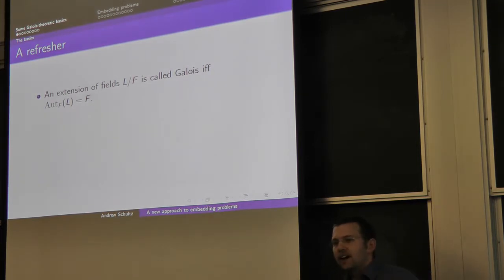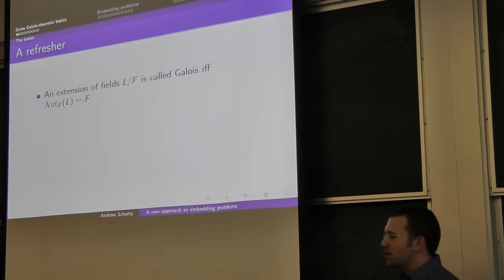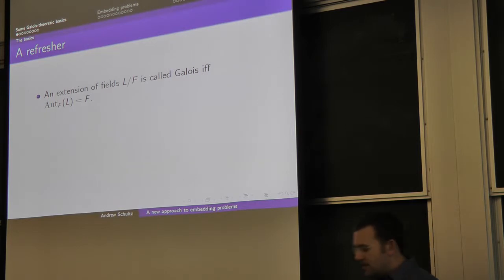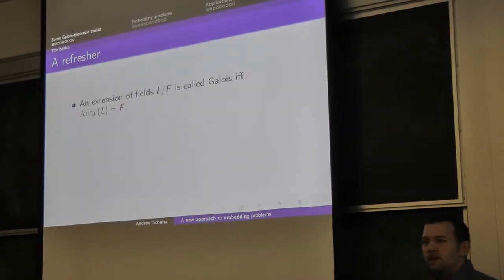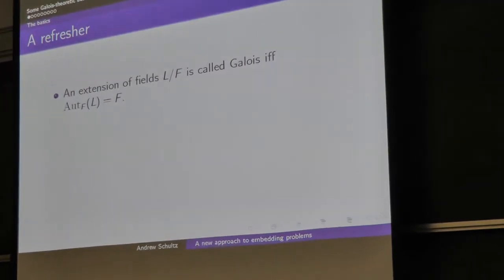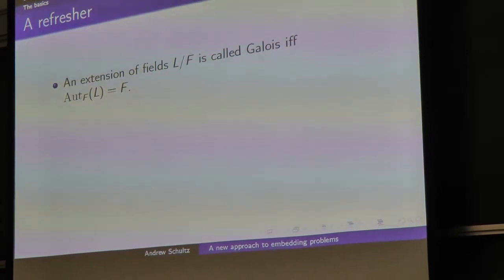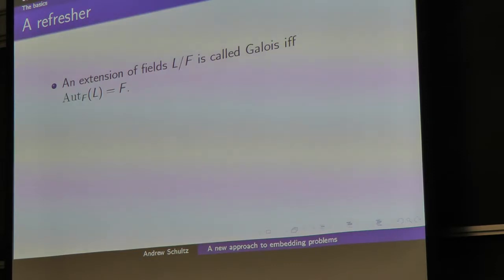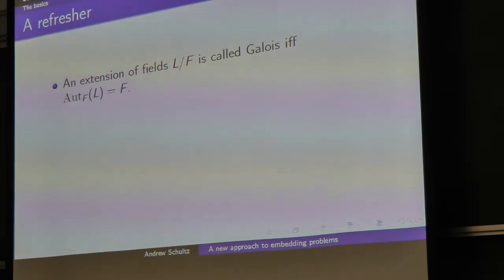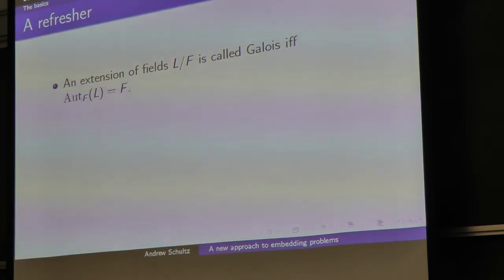What I'm going to be talking about today is Galois theory. Let me remind you what it's all about. We say an extension of fields L over F is Galois exactly when the things fixed by the automorphisms of L that fix F are exactly F — there's no bonus stuff getting fixed. It's really only F that gets fixed.